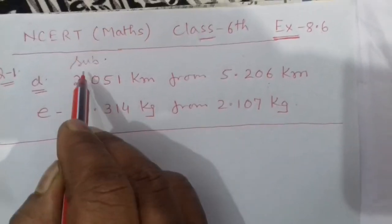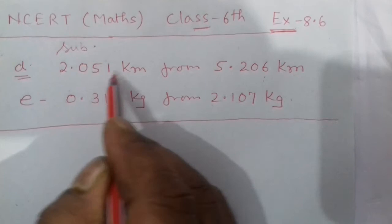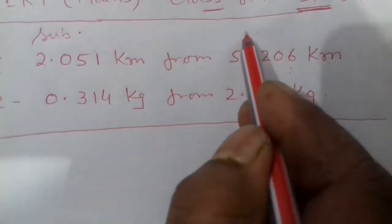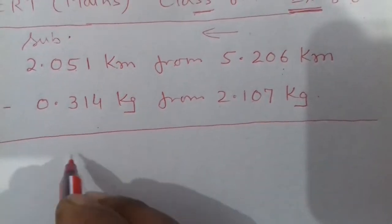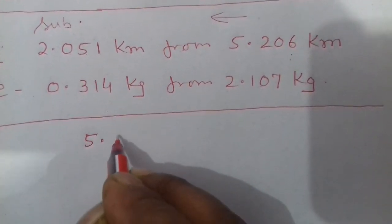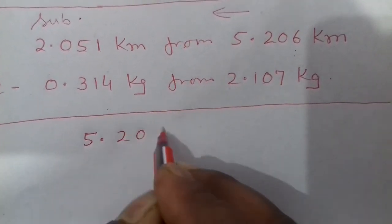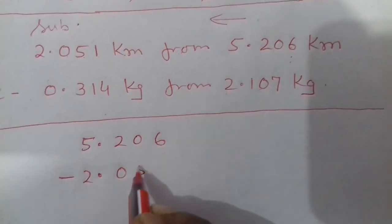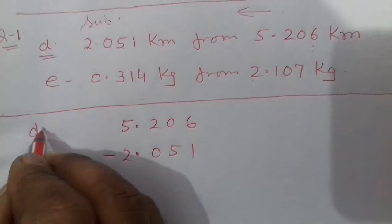Subtract 2.051 kilometer from 5.206 kilometer. We start from right side. So you write here 5.206 minus 2.051. So this is your question number D.